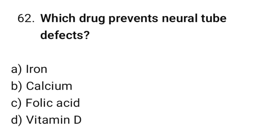Question number 62: Which drug prevents neural tube defects? The correct option is C: Folic acid.